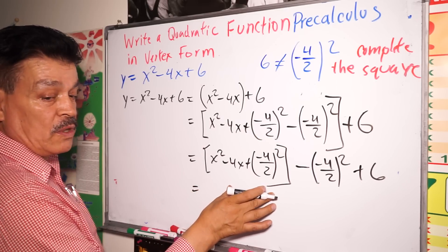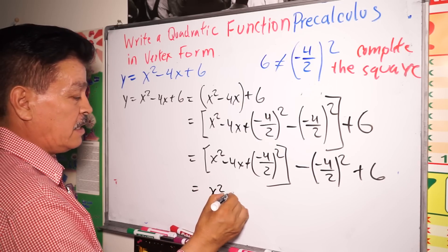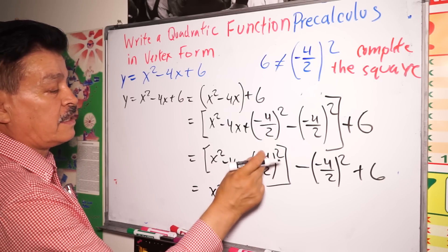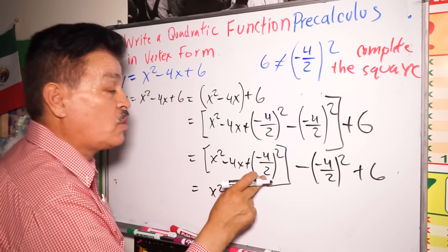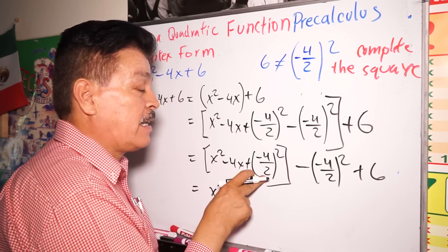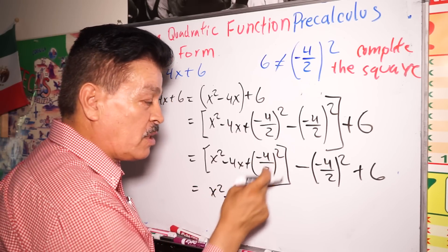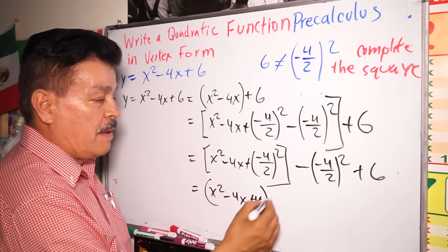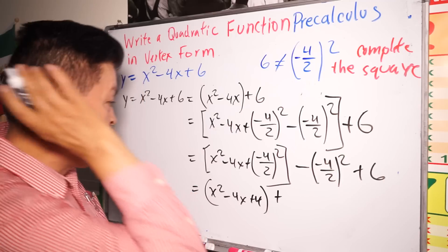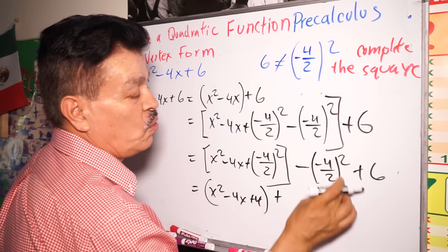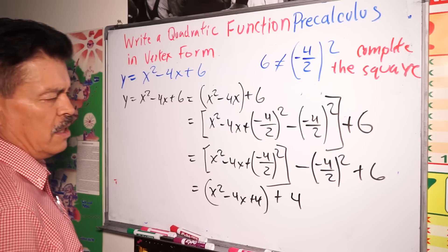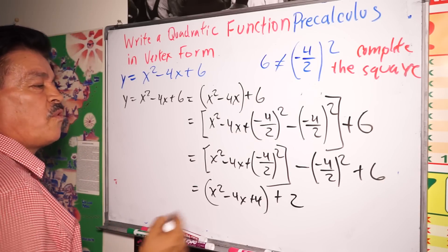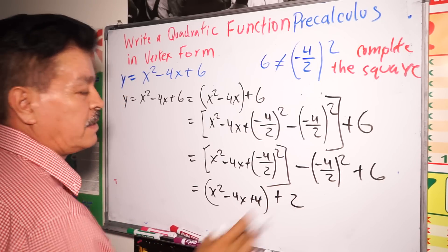When you factor this, you are going to have x squared minus 4x here. Negative 4 divided by 2 is negative 2. Negative 2 times negative 2 — because this square is 4 — so plus 4. Then negative 4 plus 6 is 2. Right, that's the answer.